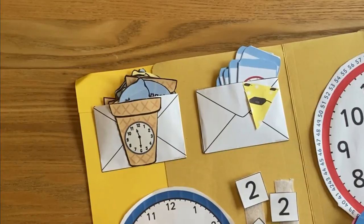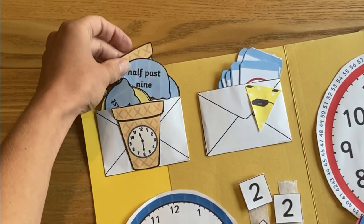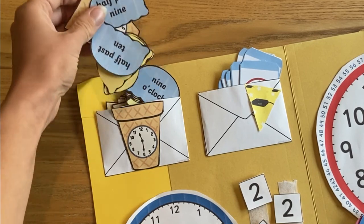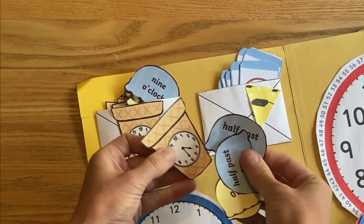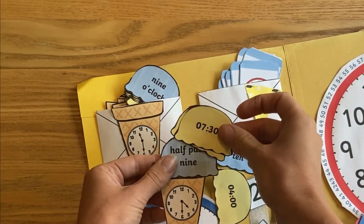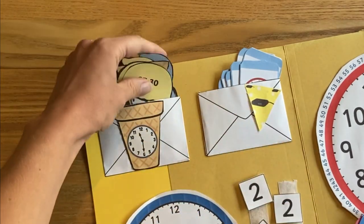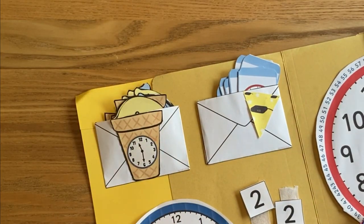There's this lovely ice cream activity on Twinkle, so we've put in lots of different times on the ice cream cones and we've got to match those up with all of the ice creams. This lap book has lots of different activities, so we don't have to do them all at once but it keeps them all together.